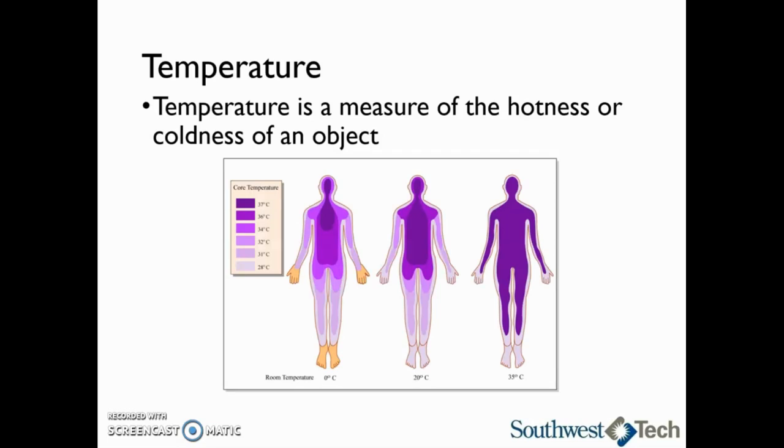In this picture, we can see a person's core body temperature when they are in rooms of different temperatures. On the left, the person is in a room that is zero degrees Celsius or the freezing point of water. You can see that their extremities, their fingers and toes, are much colder than the rest of their body. Specifically, their brain and chest or heart are much warmer than the rest of their body. As the room temperature increases, the person's body temperature increases as well.